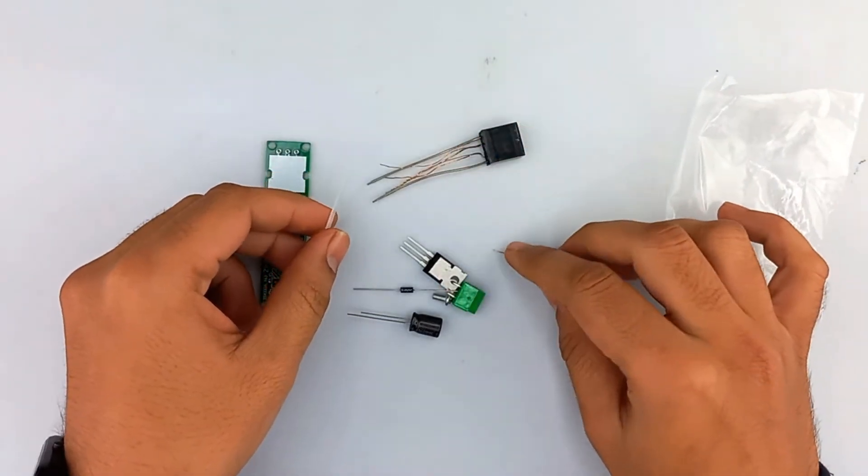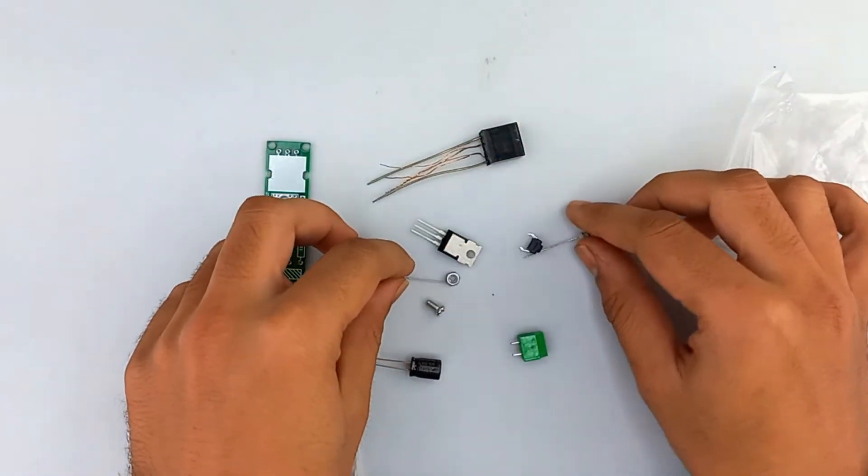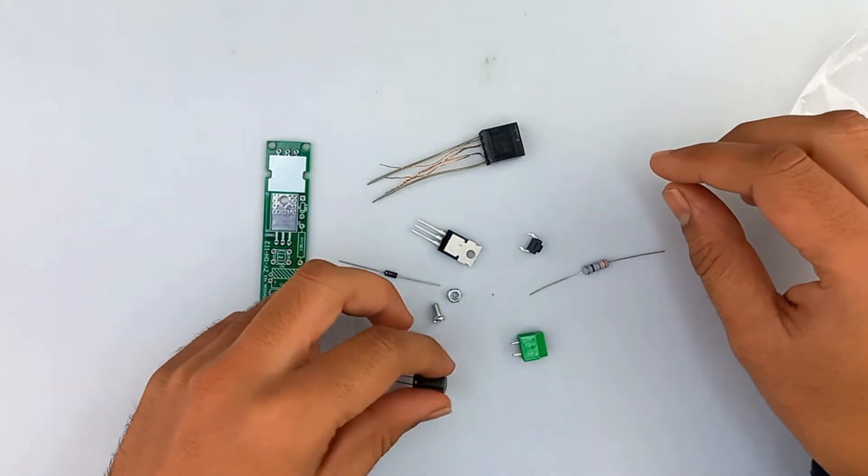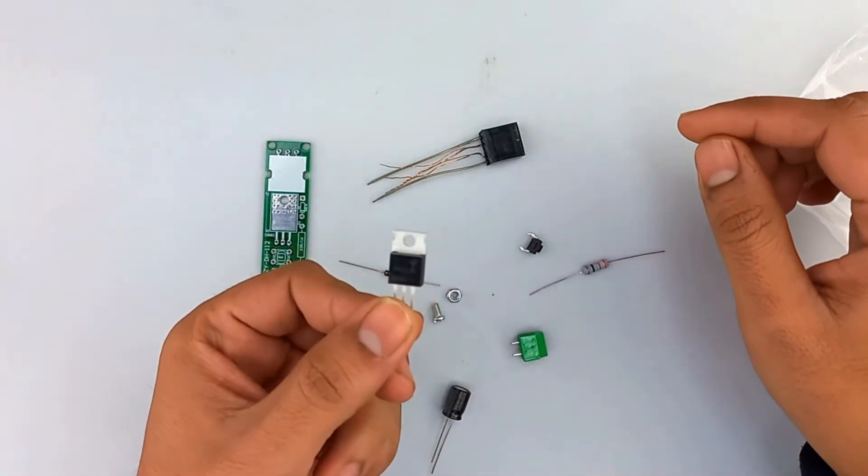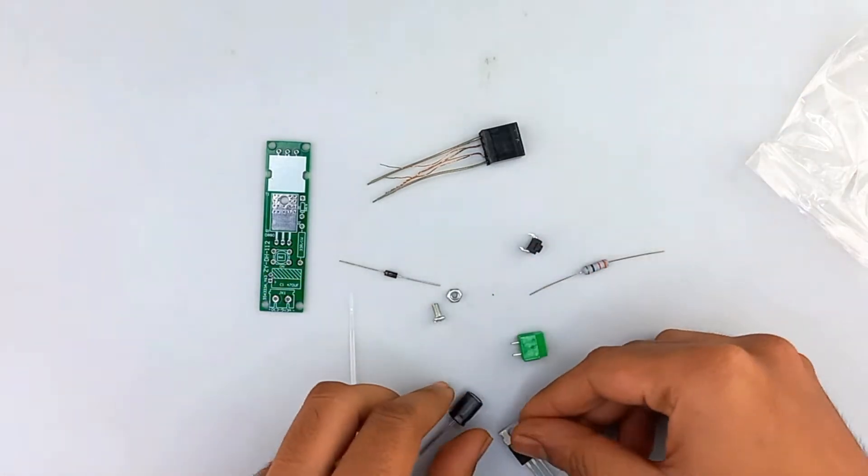In the DIY kit we get the following items: a capacitor of 470 microfarad, D880 NPN power transistor, a switch.